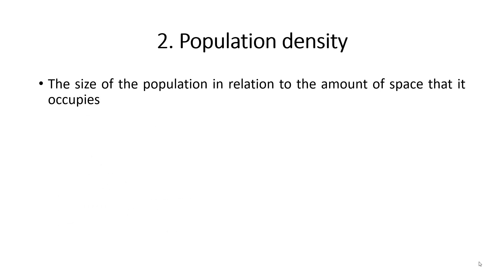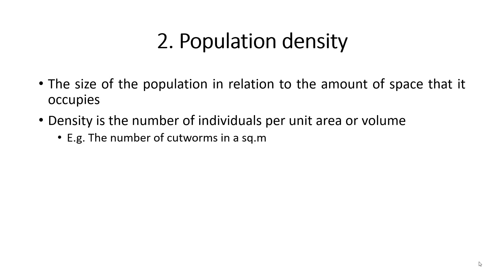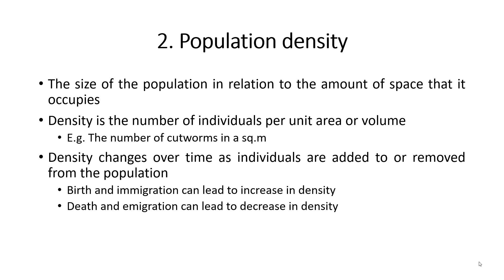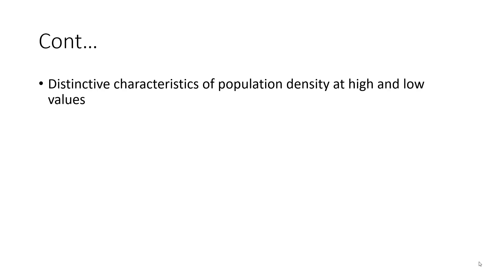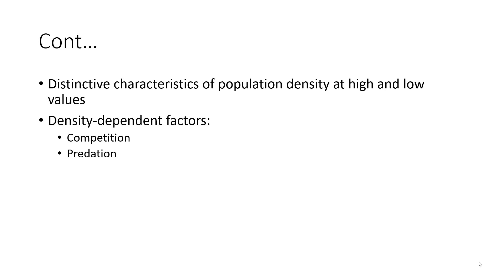Population density is a more complete description of a population's size. It refers to the size of a population in relation to the amount of space that it occupies, usually expressed as the number of individuals per unit area or volume — for example, the number of corn worms per square meter. Density changes over time as individuals are added to or removed from the population; birth and immigration can lead to increases in density, whereas death and emigration can lead to decreases. Density-dependent factors include events or conditions that change in severity as population size increases or decreases, such as competition for resources and predation.